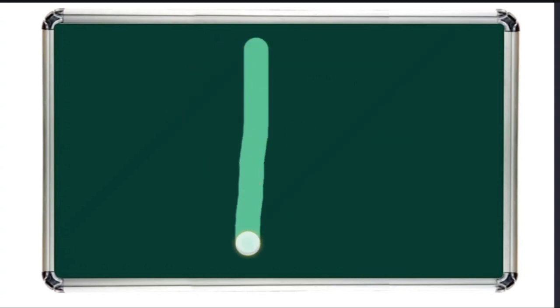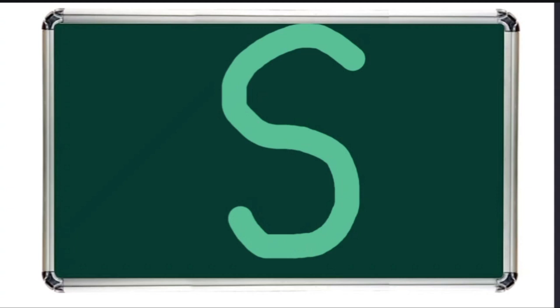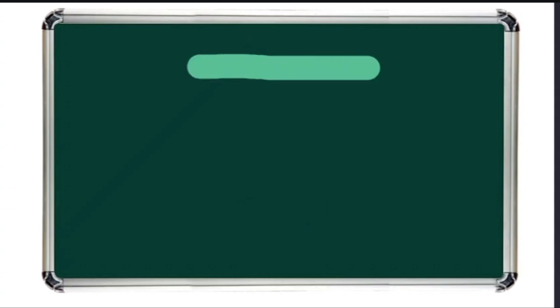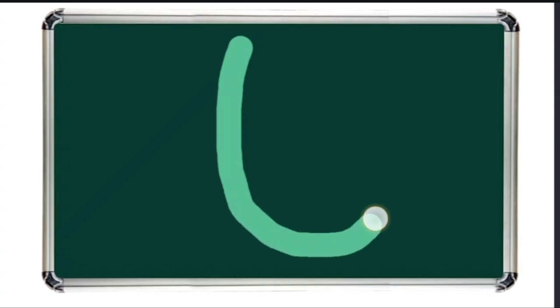R for rabbit. S for sun. T for tiger. U for umbrella.